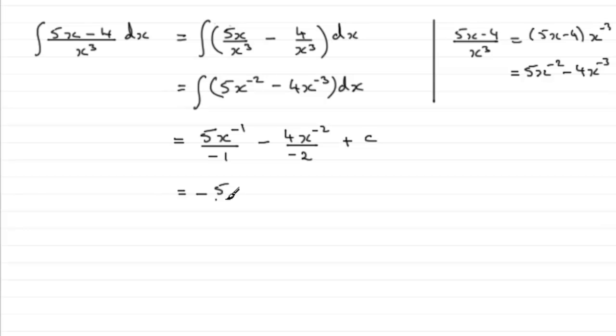And we're multiplying it by x^(-1) which is 1 over x. 5 times 1 over x is going to give me 5 over x. Here we've got -4 divided by -2, well that's going to be plus 2.